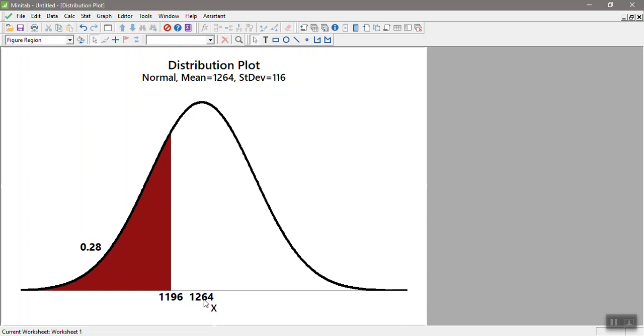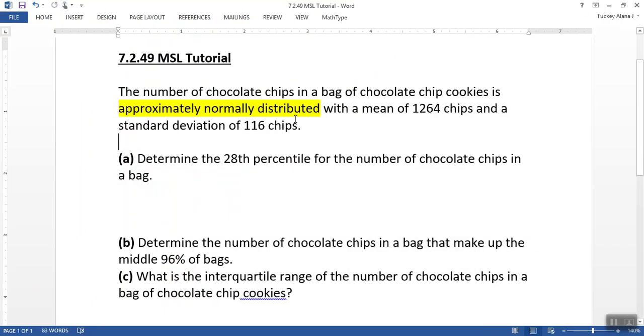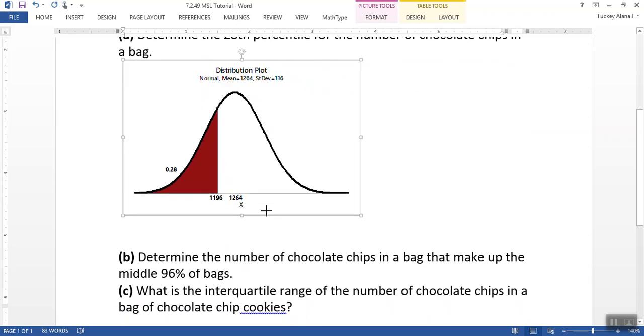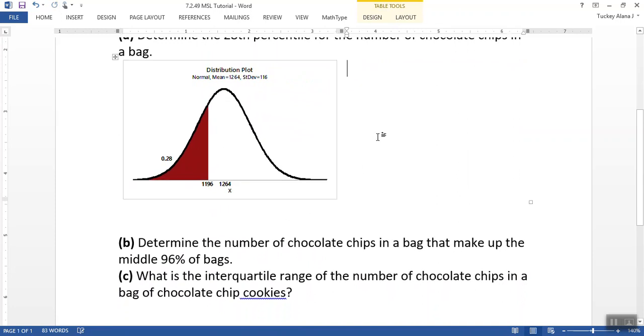So it's that nice normal curve. This area over here, which is red, is 0.28. There's the center line at 1264, and the computer program I'm using is actually already telling us the answer. The answer is 1196, but we're going to prove it because you wouldn't know that because you're not working with my fancy computer program here. This is called Minitab, in case you're interested. So I've got this going on, so I'm going to put that kind of in the middle.